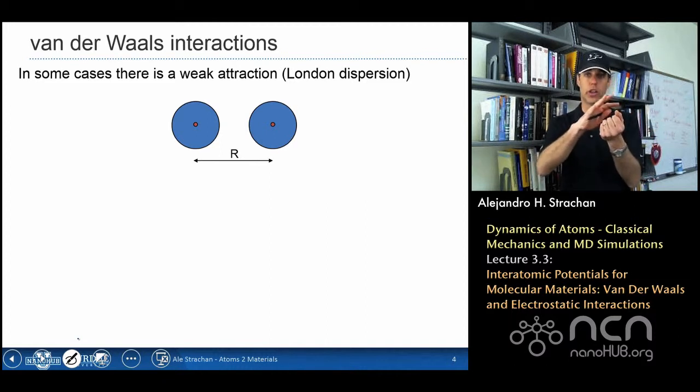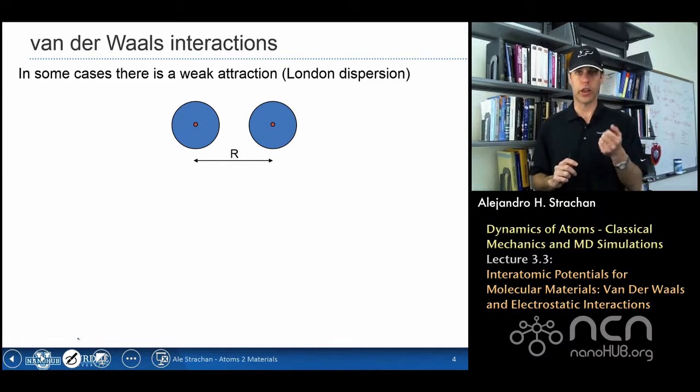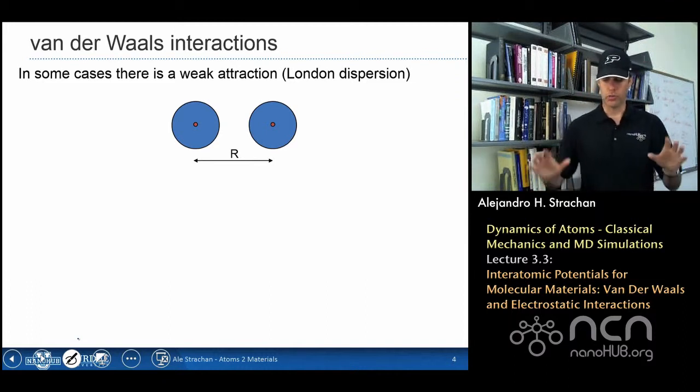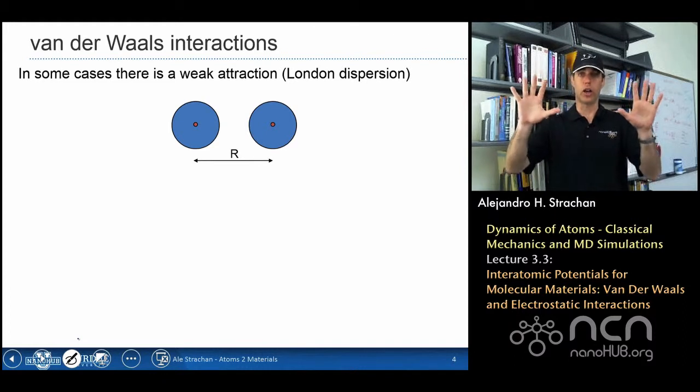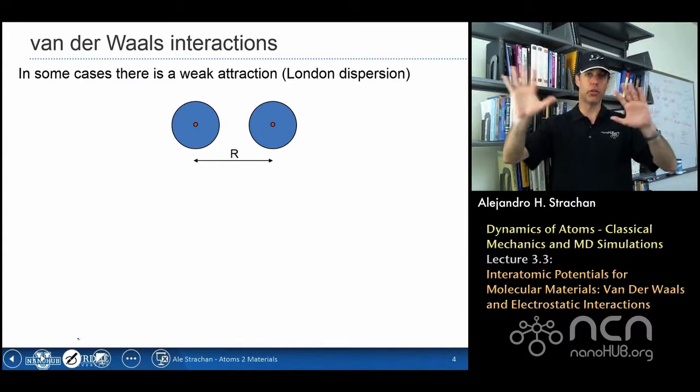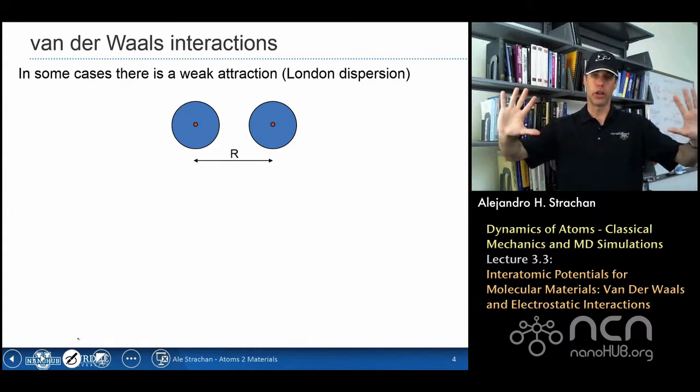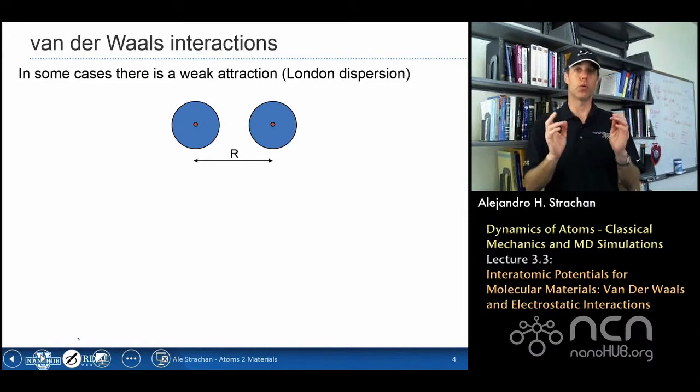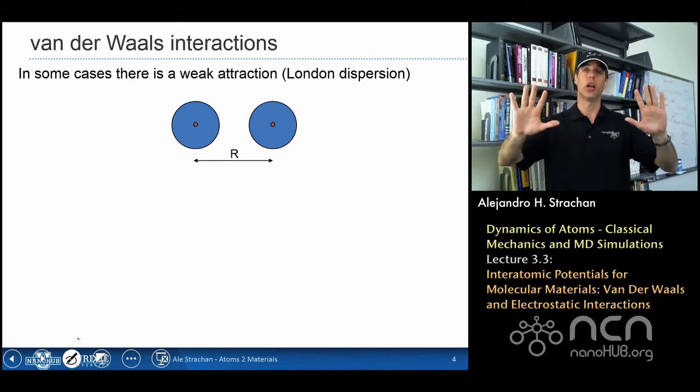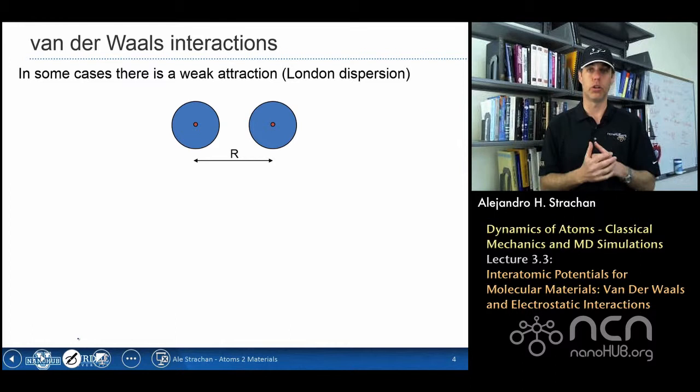These atoms have a positive core and an electronic cloud around them, and in average they are spherically symmetric, so they don't have a permanent dipole. However, the electronic charge is oscillating all the time around the nucleus, and so instantaneously I can have little dipoles. And what happens is if I have two atoms and both of them have these oscillations, each one can induce a dipole in a correlated way with one another, and these very weak induced dipoles interact electrostatically.